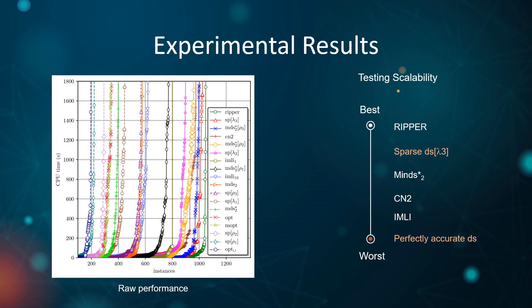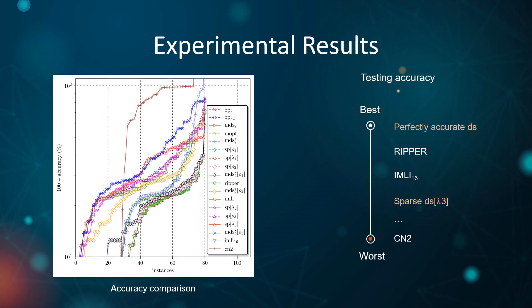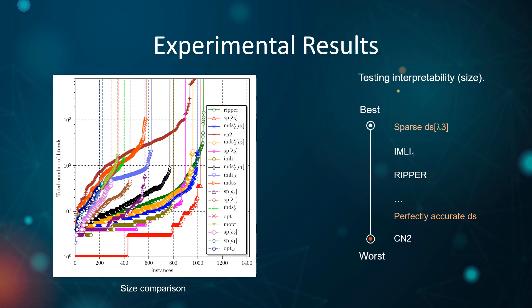The figure shows that the winner of testing scalability is RIPPER, which is able to train on the most considered data sets. Our sparse model ranked second. However, the worst approach in scalability is our perfectly accurate decision sets. Regarding testing accuracy, our perfectly accurate decision sets beat other approaches, and our sparse decision sets ranked fourth. The worst accuracy is demonstrated by CN2. Finally, from the perspective of interpretability, the winner is our sparse model. It is not surprising that perfectly accurate decision sets in general tend to be larger.